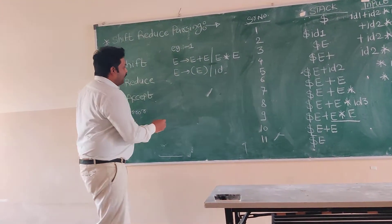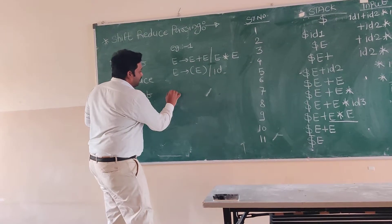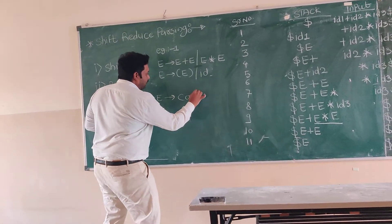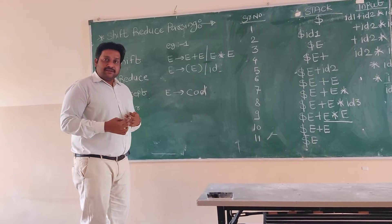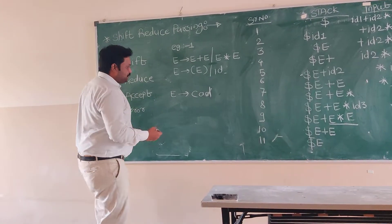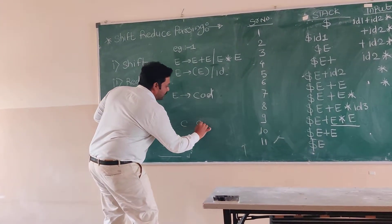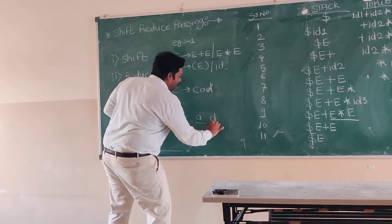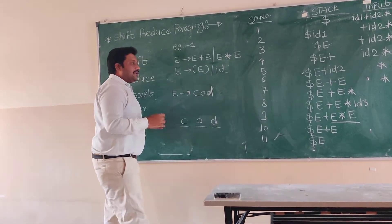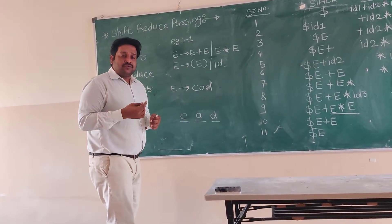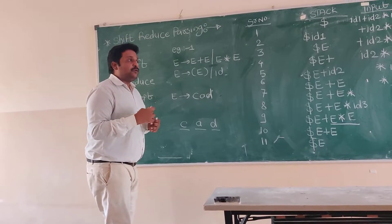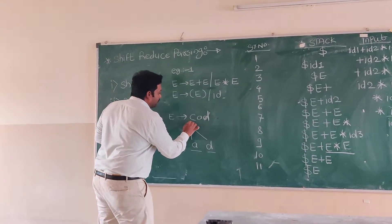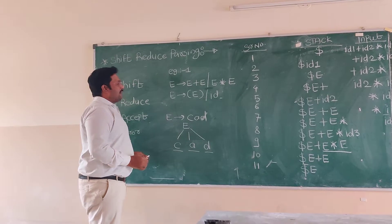Suppose we have a grammar: E produces C A D. So we have the terminals C, A, D — these are the leaf nodes. In bottom-up parsing, what we are going to do is reach our root node, that is E.